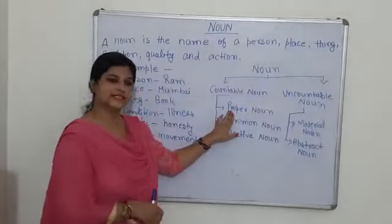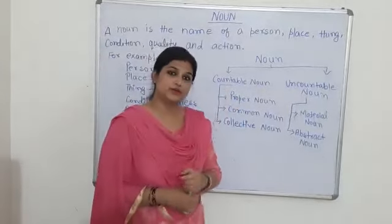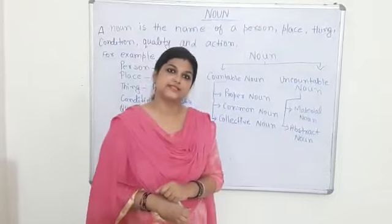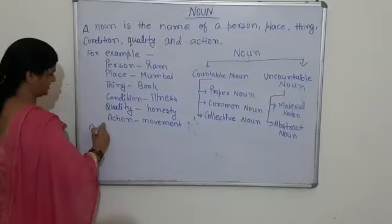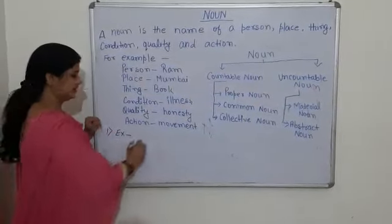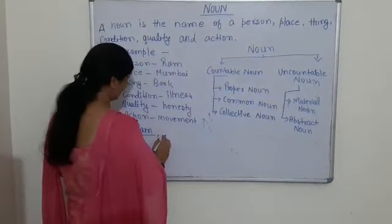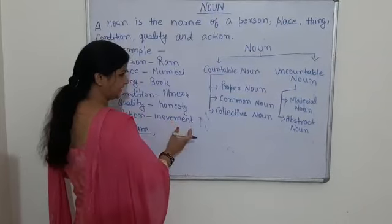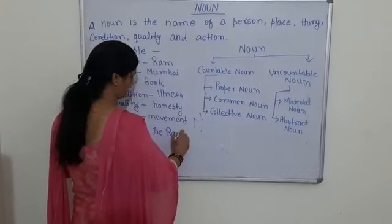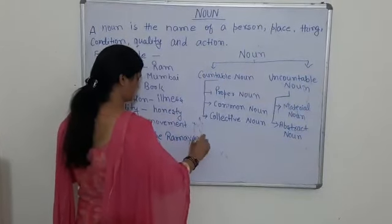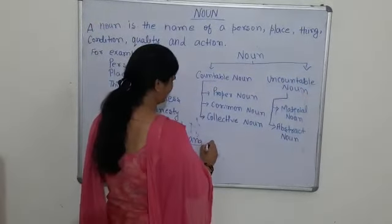Number one is proper noun. A proper noun denotes a proper person, place, or thing. For example, we can take the name of any book — The Ramayana. This is a proper noun. And for place, like Patna.